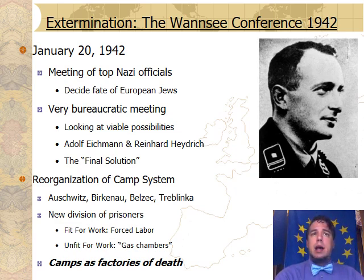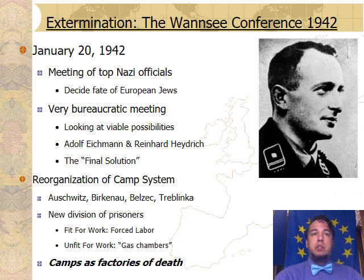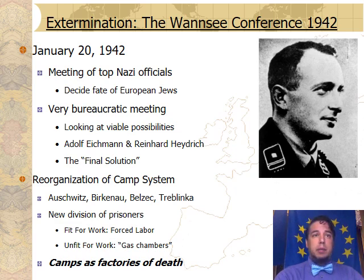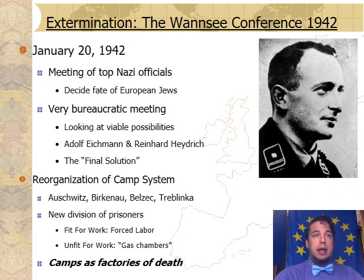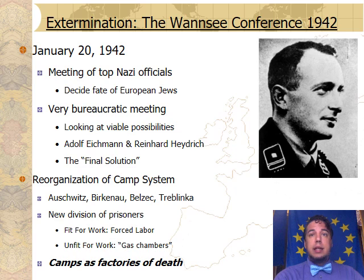What happened next was not the building of a new camp system, but a reorganization of the existing camp systems. At places like Auschwitz, Birkenau, Belzec, and Treblinka, there was the installation of gas chambers. When prisoners arrived at places like Auschwitz and stepped out of the train cars, they were quickly inspected by a doctor from the German SS and deemed either fit for work or unfit for work. Those who were still healthy enough were forced into different slave labor programs that the Germans had set up with multinational corporations right there on site at the camps. Those deemed unfit for work — the sick, the elderly, and children — were sent off to gas chambers disguised as shower rooms.